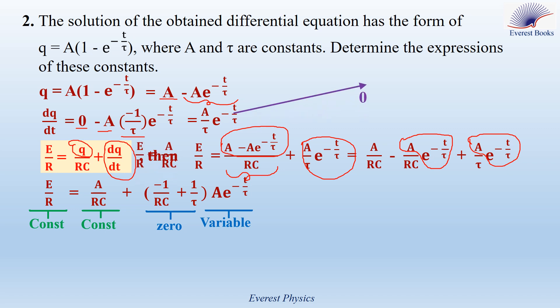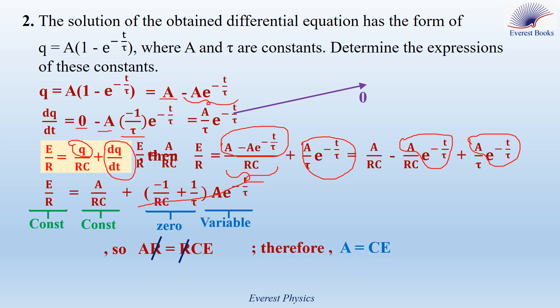Therefore, the variable term equals 0. So we can conclude: E over R equals A over RC. Cross-multiplying, A times R equals RC times E, therefore A equals C times E. Also, since minus 1 over RC plus 1 over tau equals 0, we can conclude that tau equals R times C.